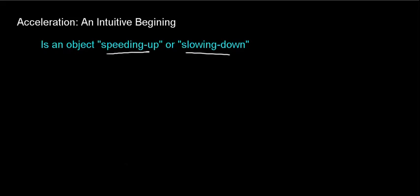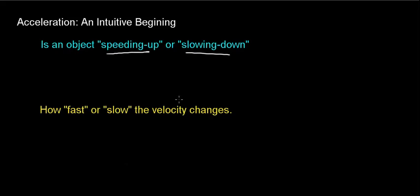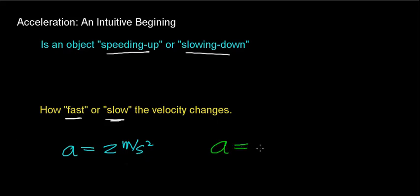Another thing you often talk about is how fast or how slow the object's velocity is changing. Those are relative terms — fast and slow are relative to something. For example, an object whose velocity was changing by 2 meters per second every second, or 2 meters per second squared, would be speeding up more slowly than an object whose acceleration was 10 meters per second squared.